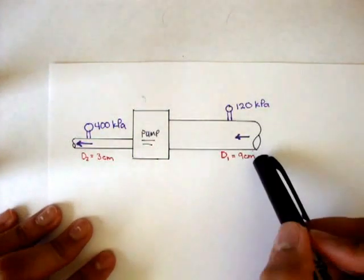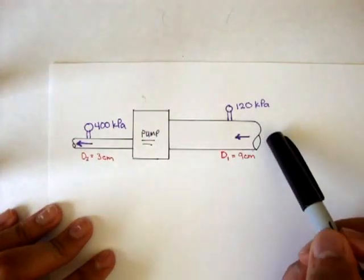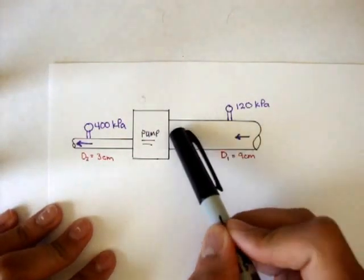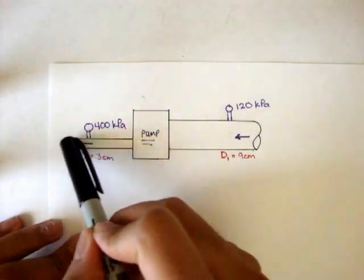The horizontal pump discharges 20 degrees Celsius water at 57 meters cubed per hour. Neglecting losses, what power in kilowatts is delivered to the water by the pump? So we have a pipe here, and water is flowing in from here, and it goes through the pump, and it comes out here.